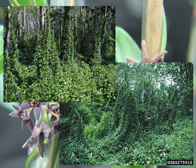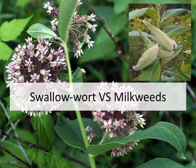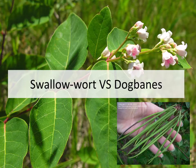Here are two examples of swallowort doing just that in a forest, and here is a close-up on how many seed pods can form on swallowort. Milkweed is mentioned as a lookalike because of the seed pod and monarch connection; however, there is not much confusion between the two. Milkweed's flowers are clustered together, its leaves do not have as waxy a coating, and even the seed pods are different — milkweed has a much larger seed pod shape.